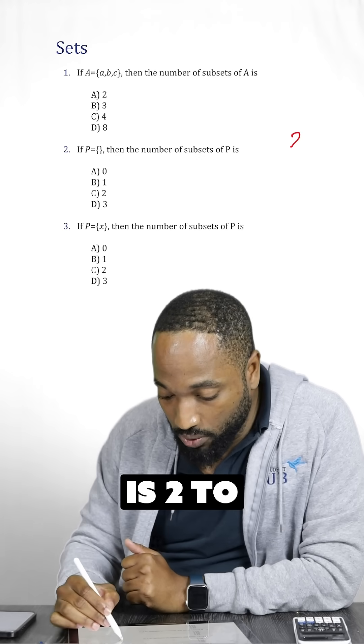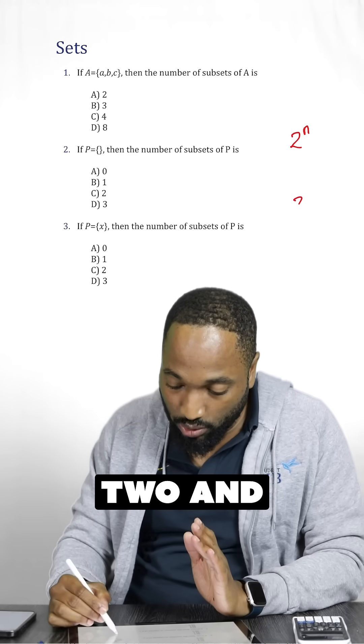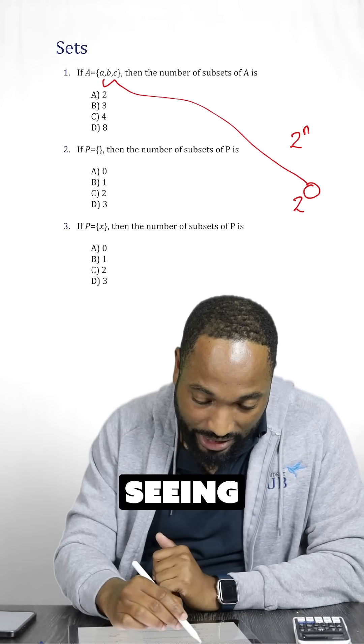The number of subsets is 2 to the power of n, all the time. What does this mean? You take 2 and you put it to the power of how many items you're seeing there.